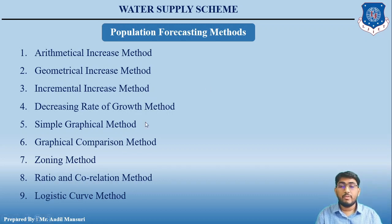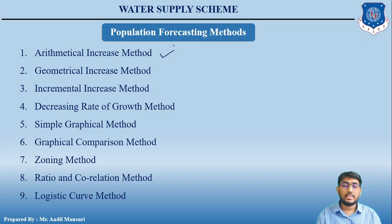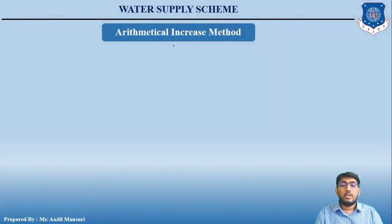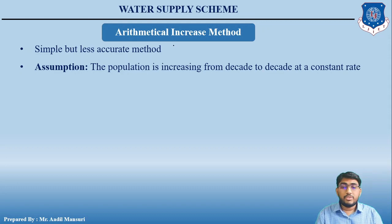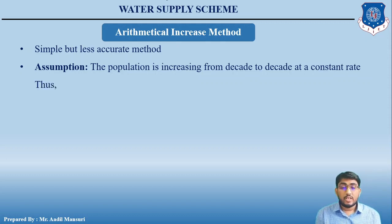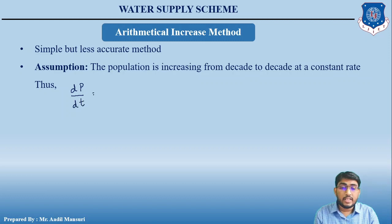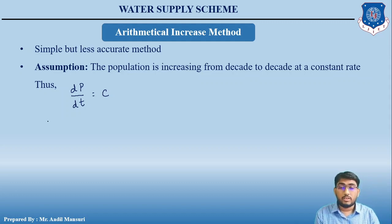In this video, we will be discussing the Arithmetical Increase Method. This method is quite simple but less accurate. It is based on the assumption that the population is increasing from decade to decade at a constant rate. Thus, the change in population DP with respect to time DT equals a constant C. According to this method, the future population can be found using: P = P0 + N × I.